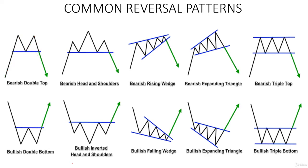The second pattern is the bearish head and shoulders. These two points are the shoulders and this is the head. You notice an upward movement in the direction of the trend, coming back to support making a new higher high, then coming back to support making the same high as the previous high. This is what is called a bearish head and shoulders.